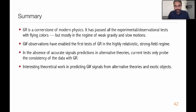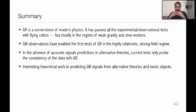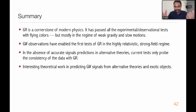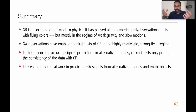To summarize: GR is a cornerstone of modern physics. It has passed all the experimental tests and observational tests with flying colors. But all these tests have been in the regime of weak gravity and slow motions. Gravitational wave observations have enabled for the first time tests of general relativity in the regime of extreme gravity and extreme velocities. So far all the data is consistent with the predictions of Einstein's theory. Currently we are dominated by statistical uncertainties, but with more and more events and louder events, we will be in a regime where we can do some precise tests of GR. We also need to rely on interesting theoretical work on gravitational wave signals in alternative theories and alternative compact objects.